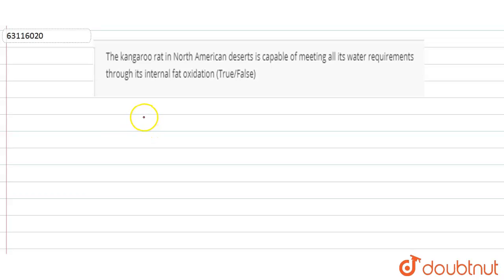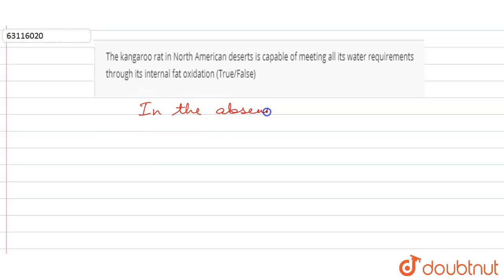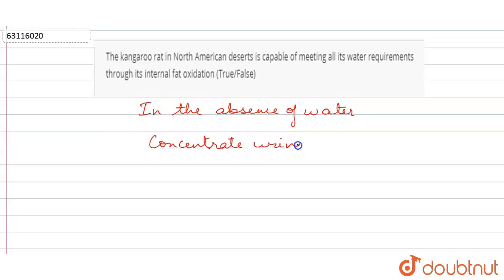So, kangaroo rats are found in North American deserts. They are capable of meeting their water requirements through the internal oxidation of fat. When water is reduced in the absence of water, concentrated urine is passed out.